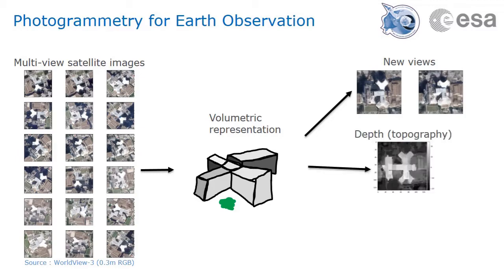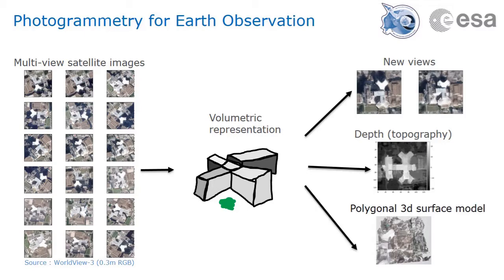Being able to extract the surface height is relevant for many different remote sensing applications. For example, biomass estimation, change detection, and land cover classification. A volumetric representation can also be converted into a polygonal 3D surface model for faster rendering, for example, for web or virtual reality applications.